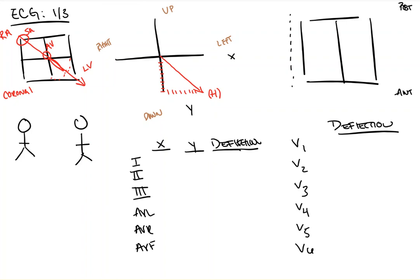Next, we're going to take a look at the vectors created by our various leads and draw them on to our axis the same way. Lead one goes here from the right shoulder to the left shoulder, lead two from the right shoulder to the foot, and lead three from the left shoulder to the foot. We're just going to draw them all right on here, just like this. One, two, and three. Then we're going to do the same thing with our augmented vector leads. They start at the heart and they go out. AVL for left, AVR for right, and AVF for foot.